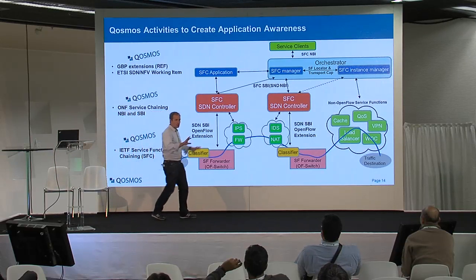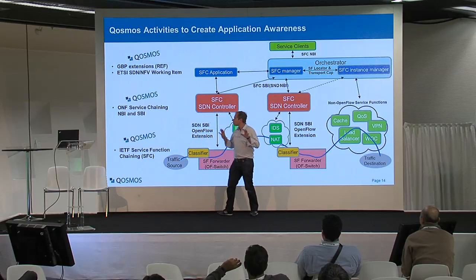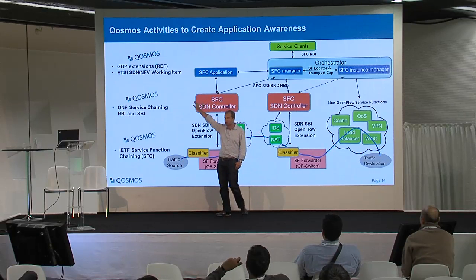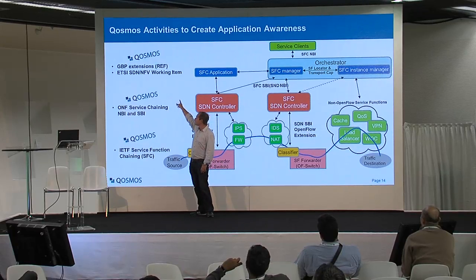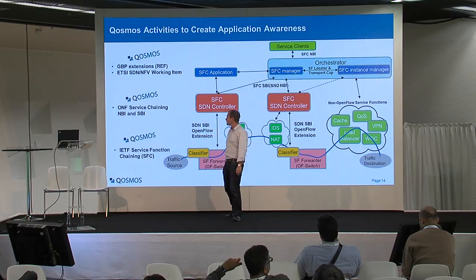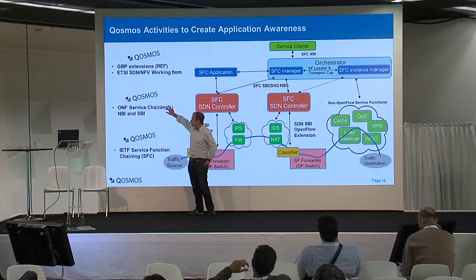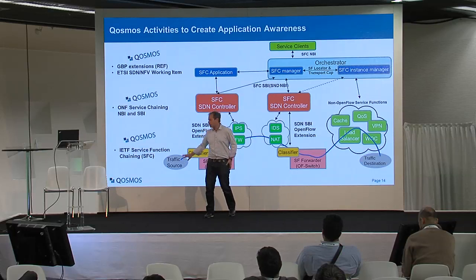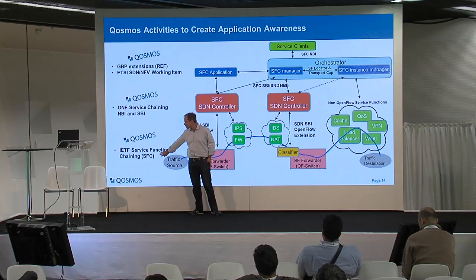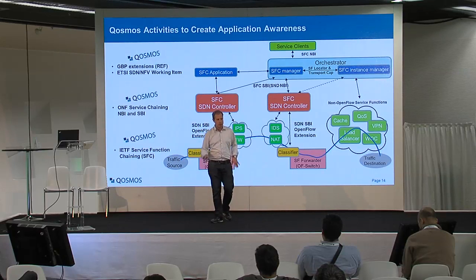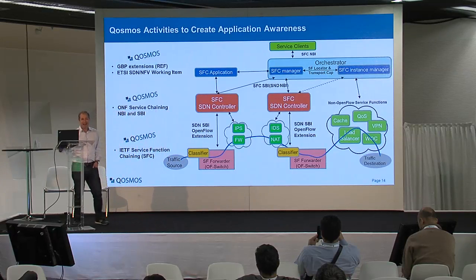At Cosmos, we are making service chaining infrastructure more application-aware. Key contributions include: making classifiers application-aware — which they are not today, being mainly layer 2, 3, 4 driven. We are involved in the ETSI-SDN liaison group in proof-of-concept work. We are working at the ONF to design how to populate the underlying infrastructure with application-awareness. And we have a few IETF drafts submitted to make SFC more application-aware.